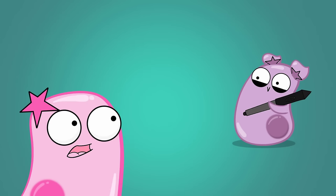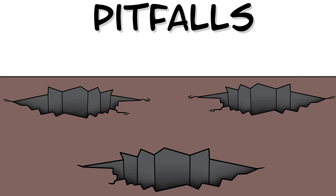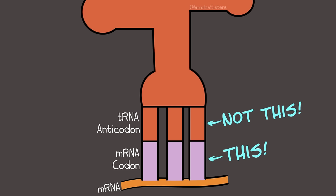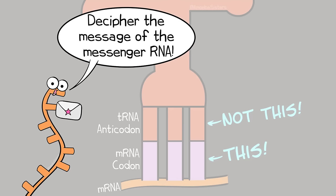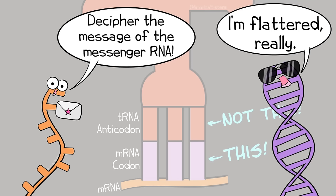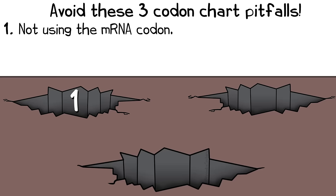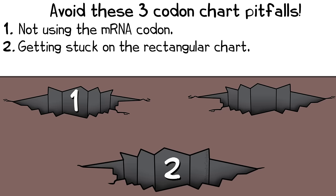We hope this was helpful, but before we go, we want to mention just a few pitfalls when reading codon charts. Pitfall number one: not using the mRNA codon. Unless it specifies otherwise, the mRNA codon is what you want to use for the codon chart. Some students will accidentally try to use the tRNA anticodon, and some will try to use the original DNA template. Now while there are charts that exist for the tRNA anticodon or DNA, unless it specifically says otherwise, you should assume it's for the mRNA codon.